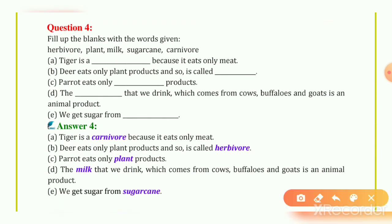Question 4: Fill in the blanks. First: Tiger is a blank because it only eats meat — answer: Carnivore. Tiger meat खाता है तो उसको Carnivore बोला जाता है। Second: Deer only eats plant products, so it is called blank — answer: Herbivore.